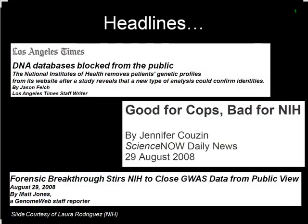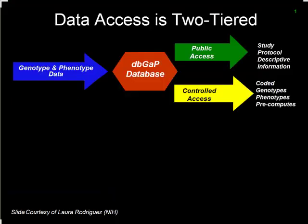There were a lot of headlines: the Los Angeles Times said DNA databases would be blocked from the public because the NIH decided to pull aggregated results offline. Others said it was good for cops but bad for the NIH, since people who subpoena records could use it while no one else could. My favorite headline was 'Forensic breakthrough stirs NIH to close GWAS data from public view' — it wasn't really closed, just removed from the front page of the site.